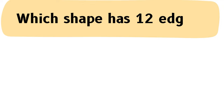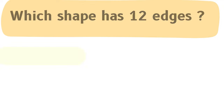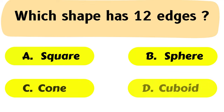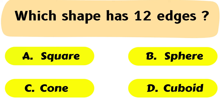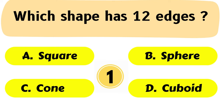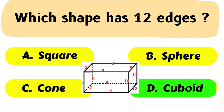Question No. 21: Which shape has 12 edges? A. Square, B. Sphere, C. Cone, D. Cuboid. The correct answer is Option D: Cuboid.